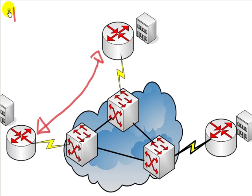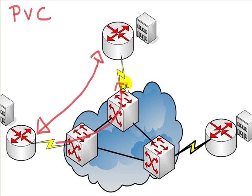The second type of circuit is known as a PVC — permanent virtual circuit. PVCs are permanently established connections used for frequent and consistent data transfer between DTE devices, going through the frame relay service provider. With PVCs you don't require the call setup or termination to take place.